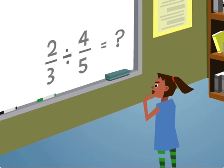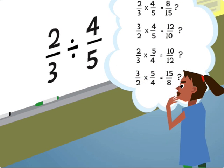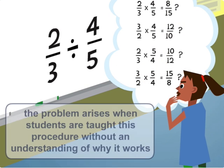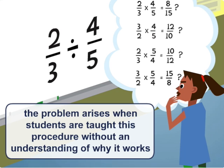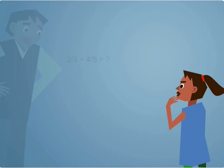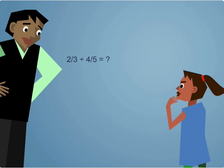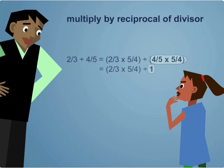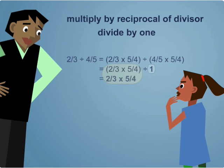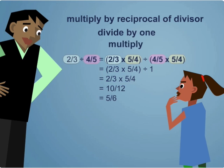Students quite often have difficulty with the invert and multiply procedure for dividing fractions. The problem arises when students are taught this procedure without an understanding of why the procedure works. Students are less likely to make errors if the steps involved are clearly explained. They need to see that multiplying a number by its reciprocal yields a product of one, and then understand that dividing a number by one doesn't change the number. Once this is clear, teachers can show that invert and multiply involves multiplying both fractions by the reciprocal of the divisor.